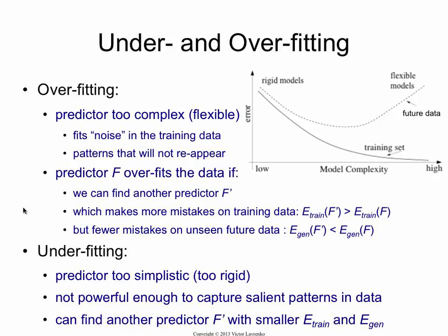Then, at some point, an interesting thing starts happening. As you make the model more and more complicated, throwing more features in and allowing more flexibility using non-linear components, the performance on training data keeps getting better — lower and lower errors until eventually you hit zero. If you're using something like a decision tree, your training error will hit zero. But if you keep measuring error on future data, you'll notice the future error actually starts rising at some point. That is the overfitting happening. The more you overfit to your training data, the worse your performance tomorrow will be.